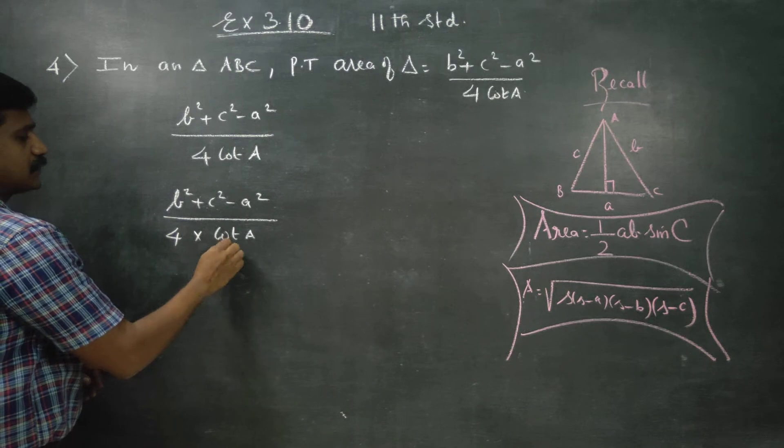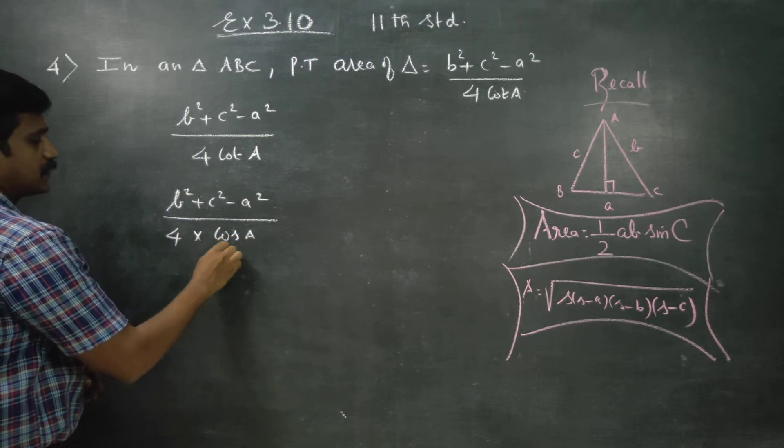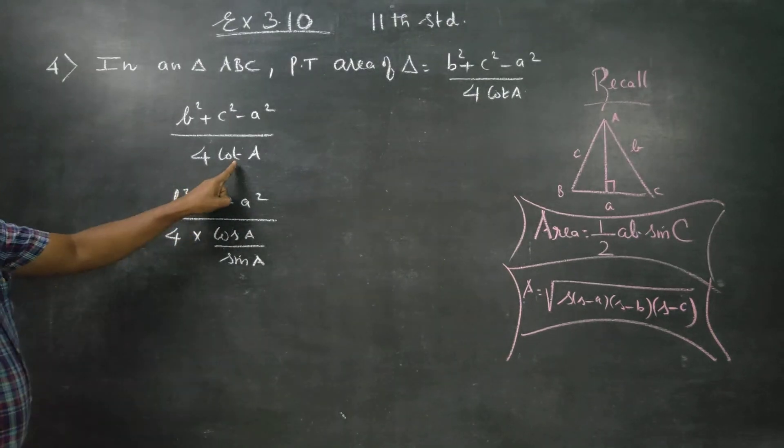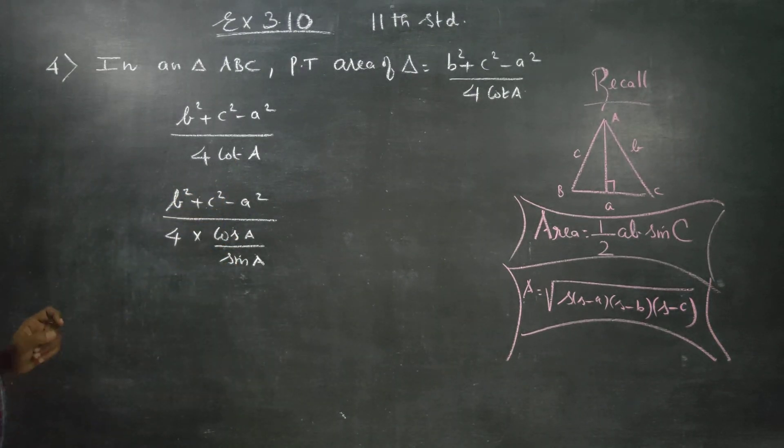Cos a by sin a, am I right? This is my cot a formula, cos by sin.